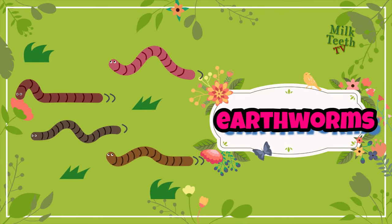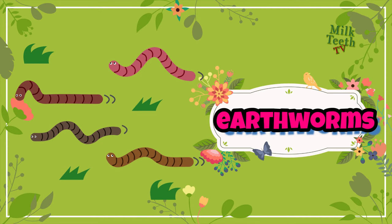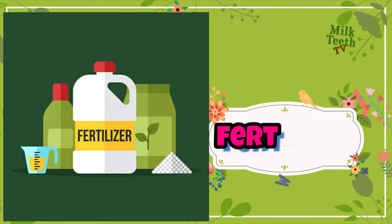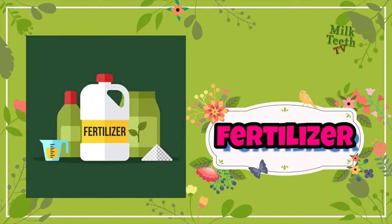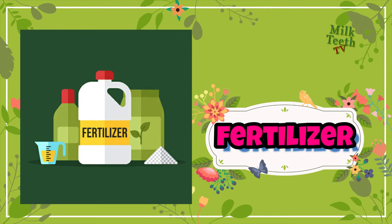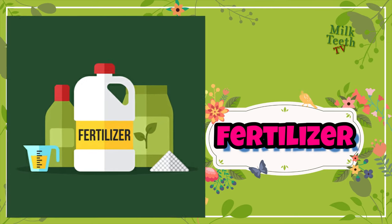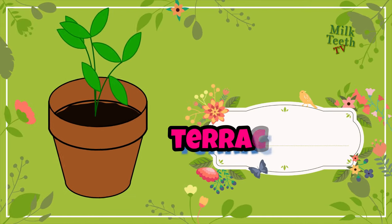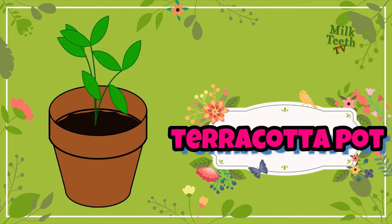Planting objects. This is soil or mud, in which a plant grows. These are earthworms — small crawling animals or insects that live in the soil and make the soil fertile. They are good for the soil. This is a fertilizer — a natural or chemical compound that is added to the soil to make it more fertile and provide all the necessary nutrients to the plants, essential for its growth.